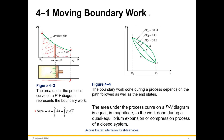You can have a starting point and an ending point, but still have different process paths depending on the work you're doing — A, B, and C to denote the paths — and you see they result in different kilojoules of work. The area under the process curve on a PV diagram is equal in magnitude to the work done during a quasi-equilibrium expansion or compression process of a closed system, and that's going to enable us to calculate it.